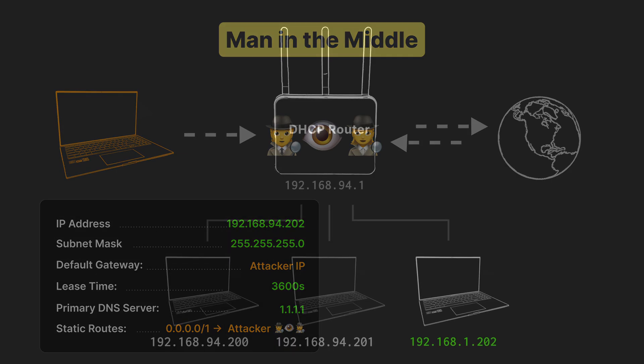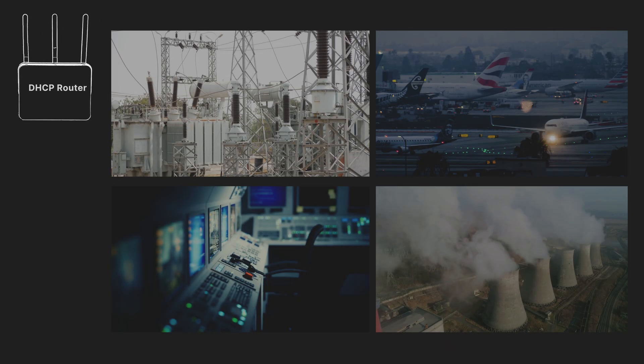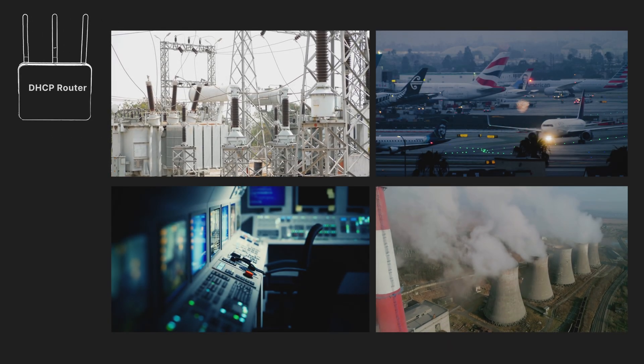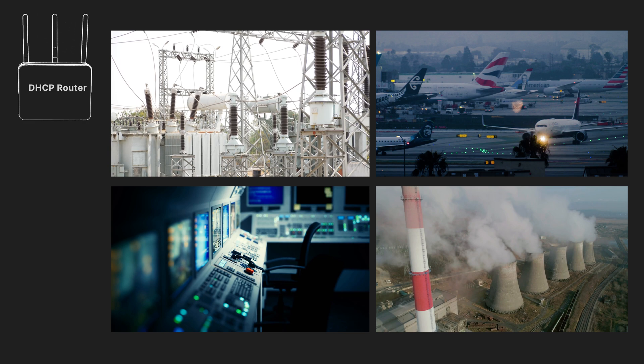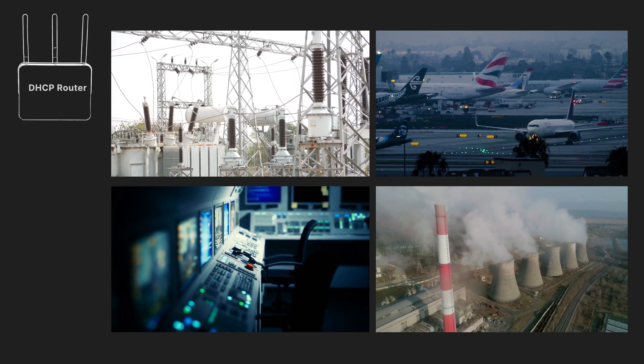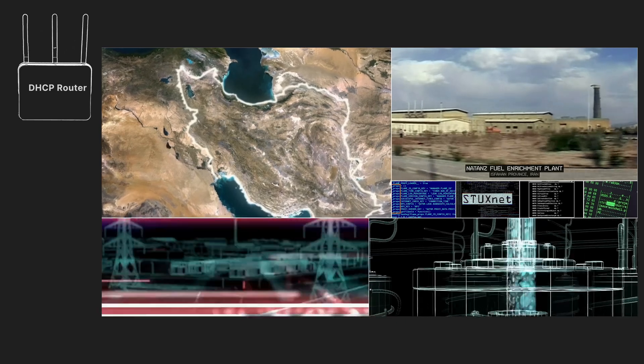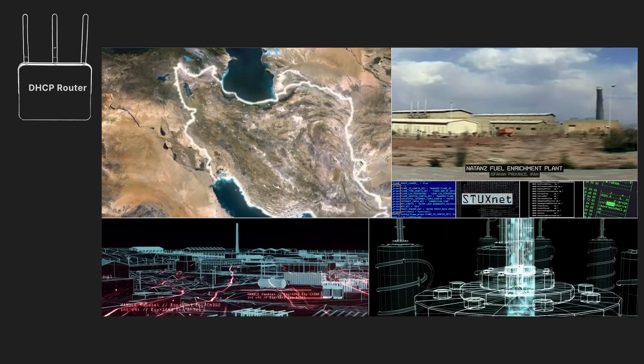So this boring old DHCP server we take for granted can now be used to disrupt any device using it to get an IP address. Just think about all the critical infrastructure out there that's using DHCP — things like power plants, airports, water treatment sites. Manipulating that traffic could cause serious, major physical damage and disrupt all kinds of systems that affect our everyday lives.